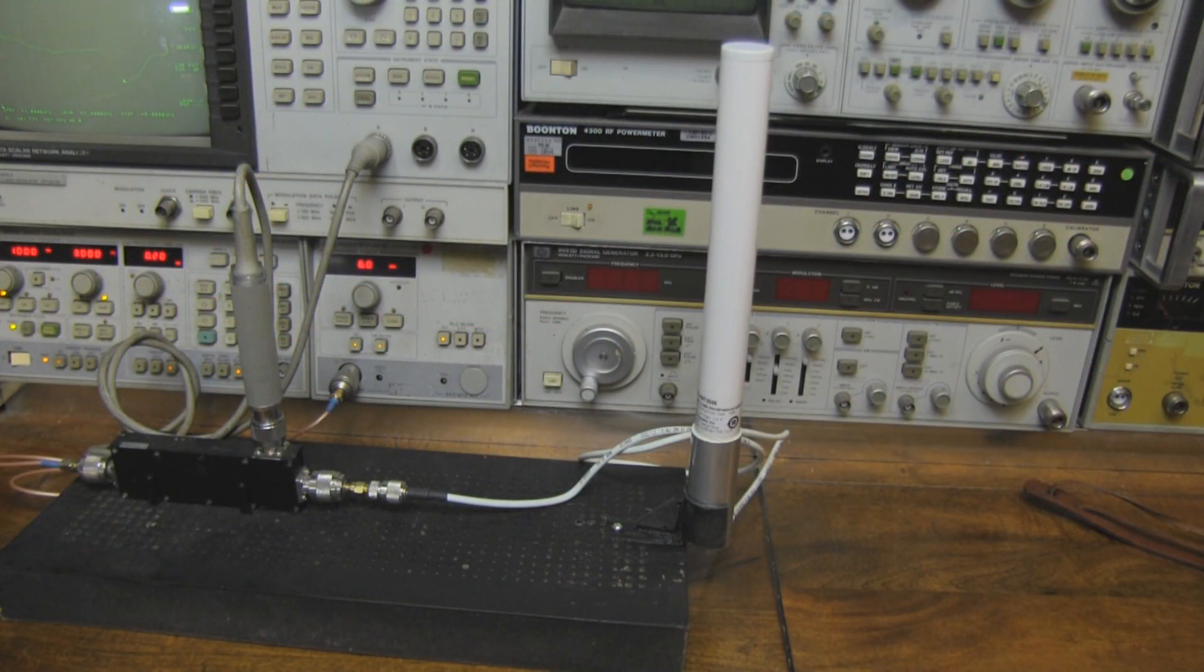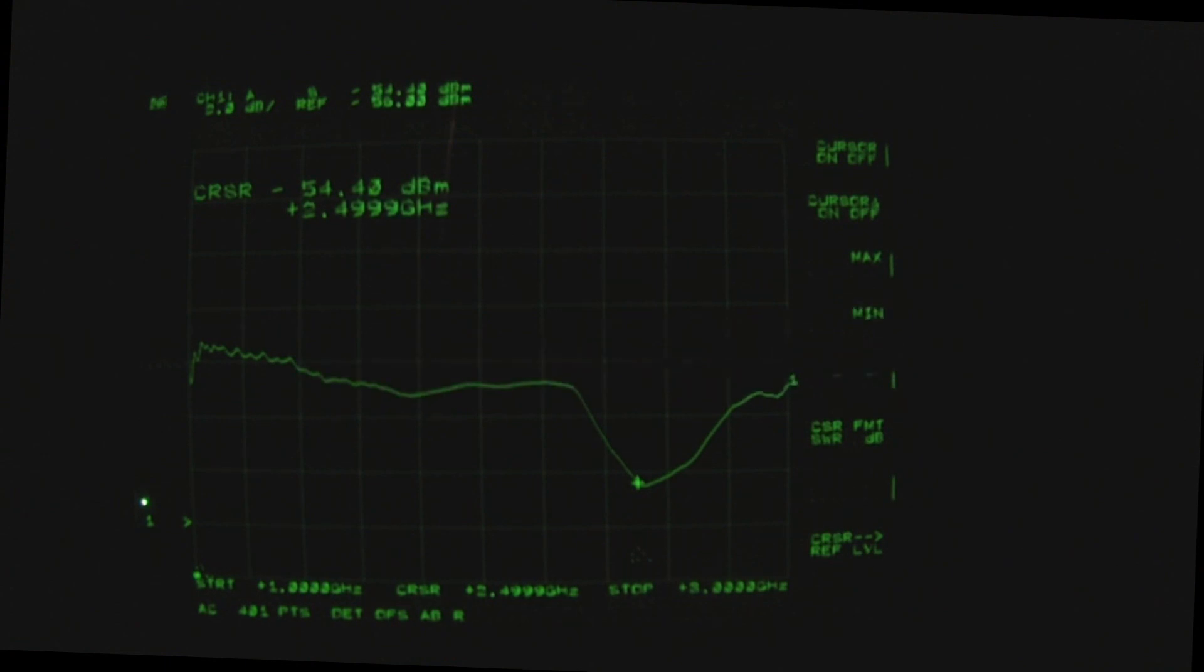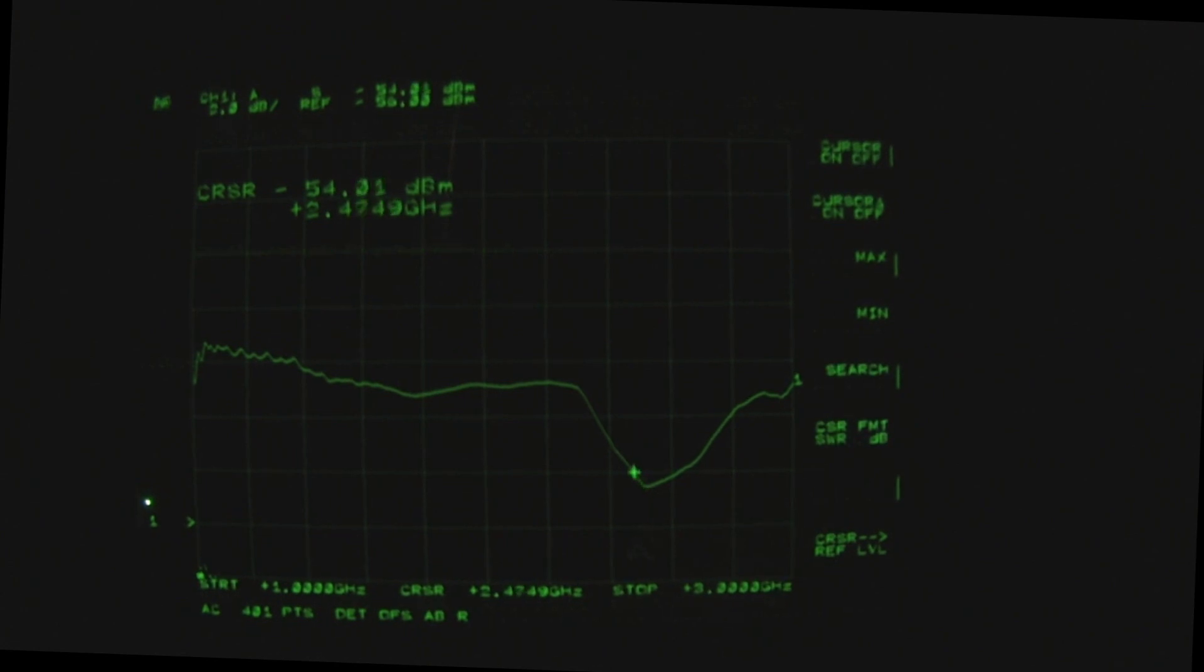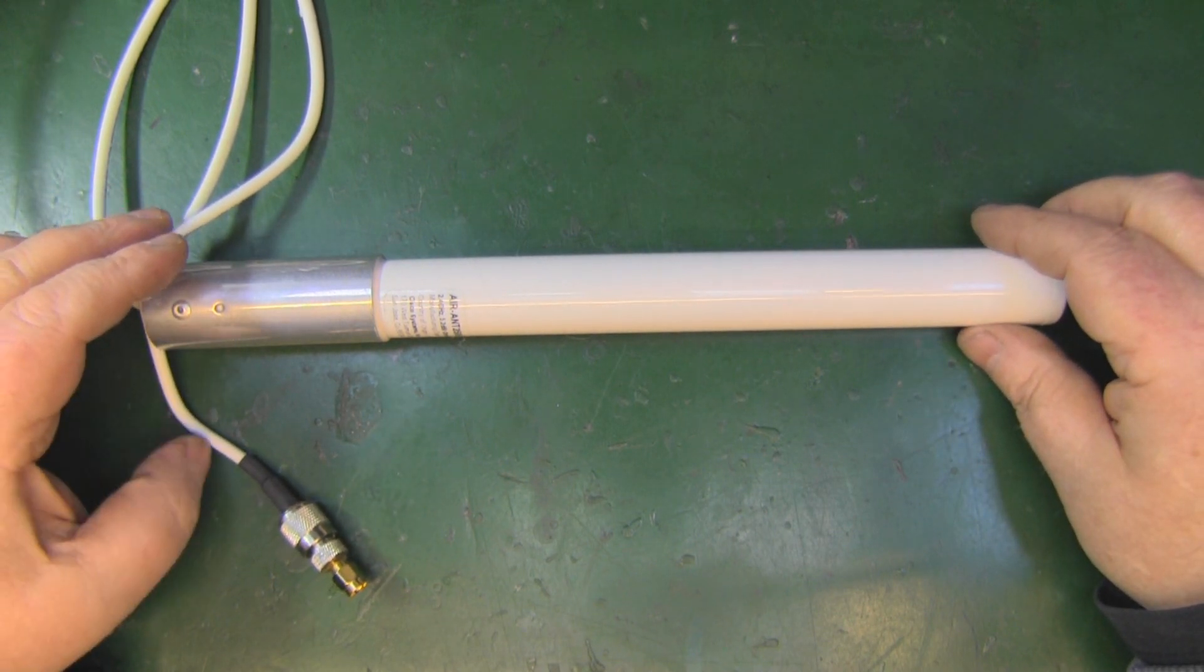Here it is on the test bench, and the output is kind of what you'd expect from a company like Cisco. We're scanning from 1 gigahertz all the way up to 3 gigahertz, and you can see this dip here bang on in the Wi-Fi spectrum. The cursor is on 2.49-2.50 gigahertz, so yeah, spot on in that Wi-Fi spectrum.